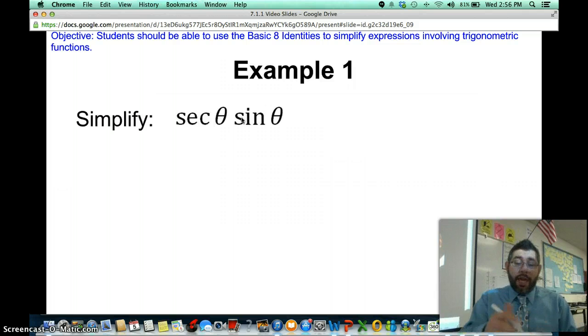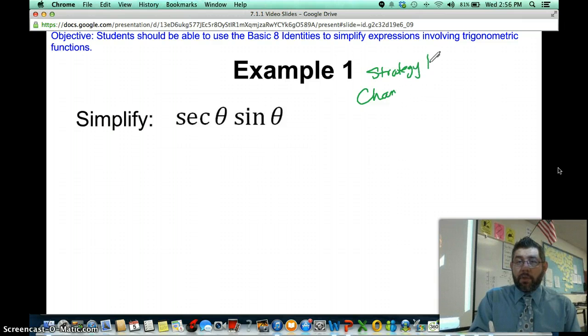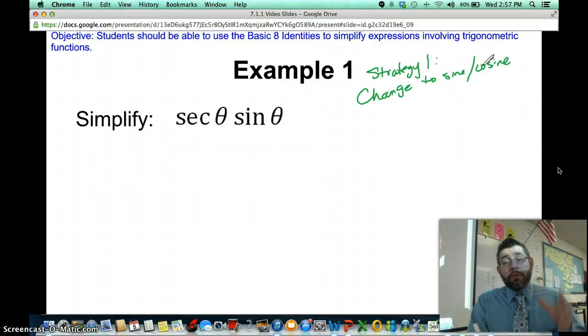The first strategy is turn everything into sine and cosine. I'll write it here. Strategy one: change to sine or cosine. We're going to change everything else to sine and cosine that's not already sine or cosine, like a secant.